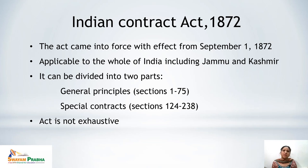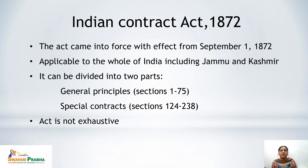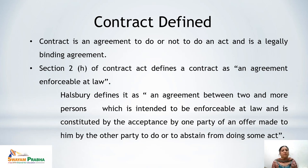This act is divided into two parts. The first part includes general principles covering all types of contracts irrespective of their nature. The second part covers special contracts from Section 124 to 238, dealing with contracts of indemnity, bailment, pledge, and agency. Moreover, this act is not exhaustive, meaning it does not provide rules for other contracts like the Sale of Goods Act or Partnership Act.